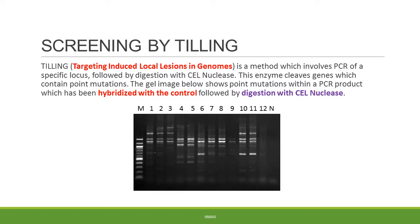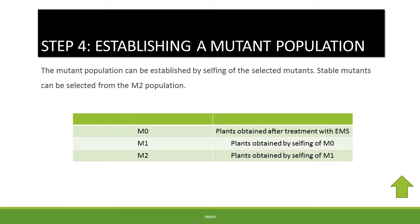CEL nuclease is derived from celery and it specifically creates cleavage in a mismatched region of a control and a mutated PCR product. Once a mutant population has been established, subsequent populations M1 and M2 are derived by self-fertilization. For instance, upon exposure of a tomato plant to a chemical mutagen, the first germinated seedlings are designated as M0; subsequent generations derived by selfing are designated as M1 and M2 respectively. One should take into account that mutations may not be retained over subsequent generations and eventually the plant will revert to its wild type.